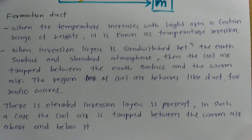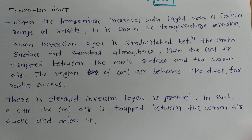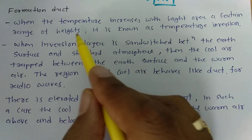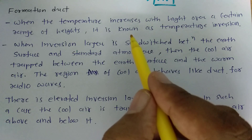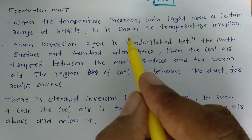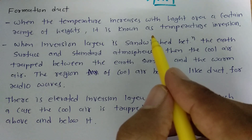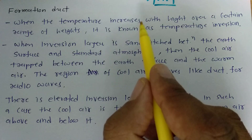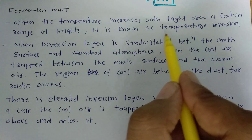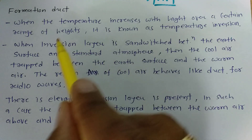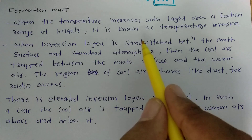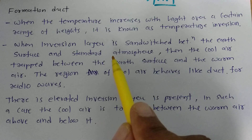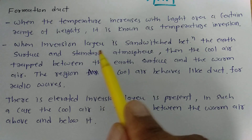Now let us understand how duct formation happens, followed by single-hop and multi-hop propagation. When the temperature increases with height over a certain range of height, it is known as temperature inversion. Usually, as you increase height, temperature decreases. But for a certain range of height in the inversion layer, as you increase height, temperature increases instead. The inversion layer is sandwiched in between standard atmospheric layers.